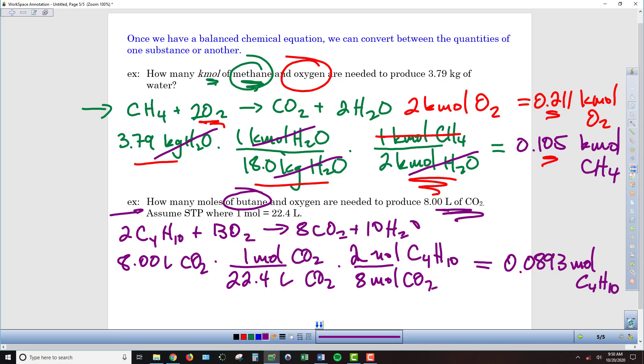And similar to what we did last time, we can use the same start here with the carbon dioxide, converting the carbon dioxide into moles from the liters, but then use a different conversion factor here. So we've got 13 moles of oxygen to the 8 moles of CO2 instead of the 2 moles of the butane. And so then we end up with 0.580 moles of oxygen.